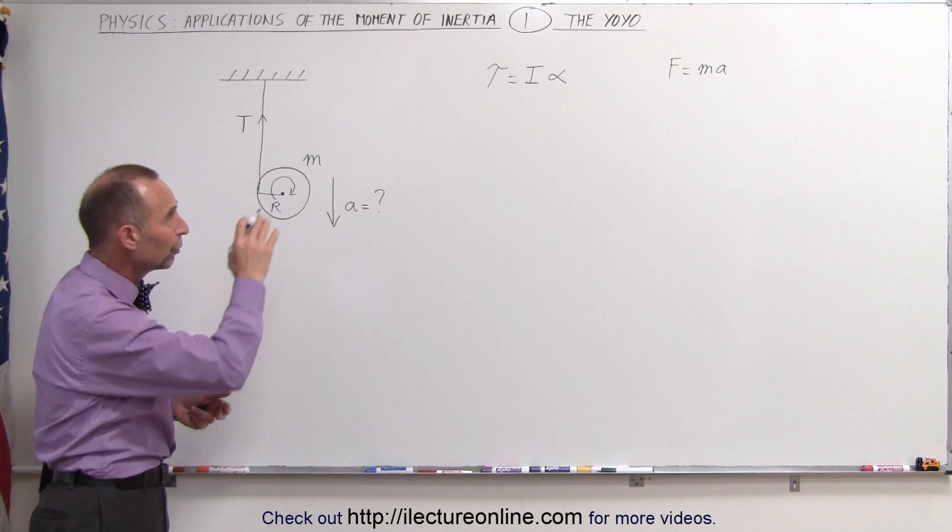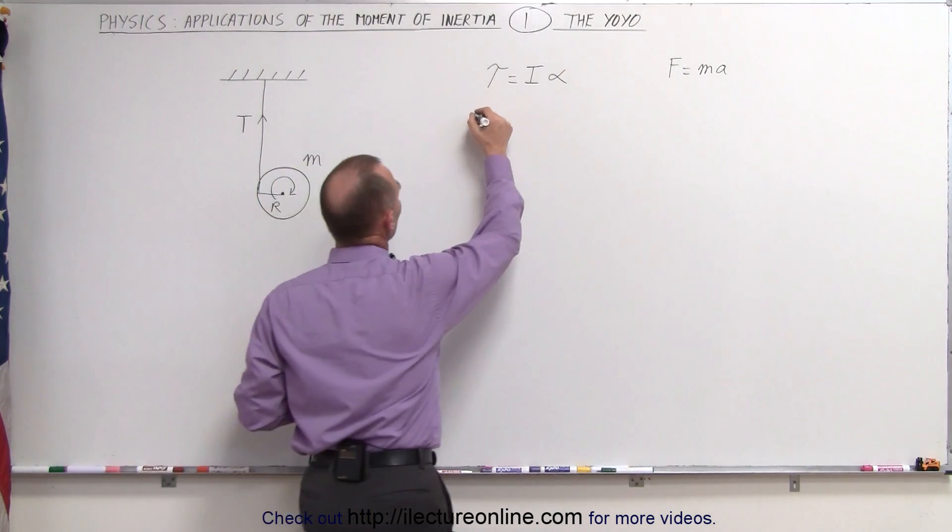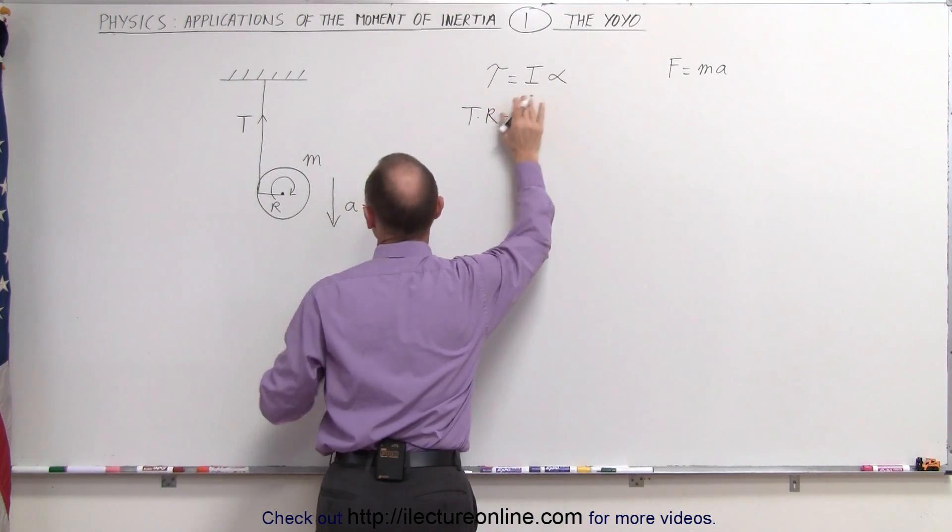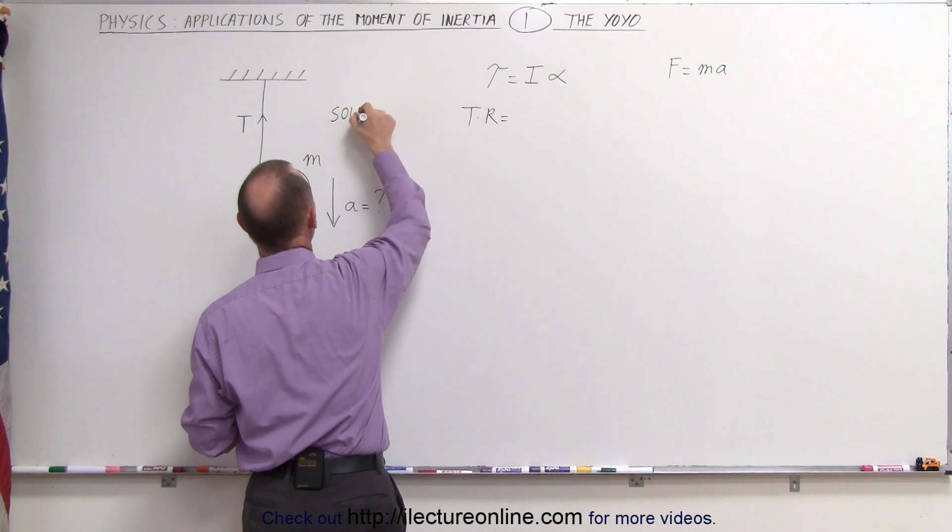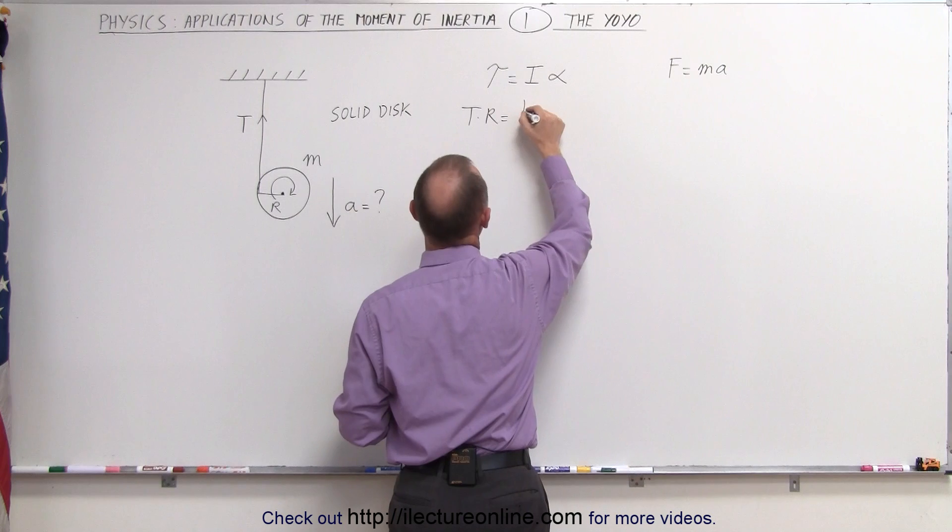First of all we'll do the first equation. The torque is caused by the tension times the radius. So we have the tension times the radius is equal to the moment of inertia of a solid disk. So think of this as being a solid disk and so therefore the moment of inertia would be one half the mass times the radius squared.